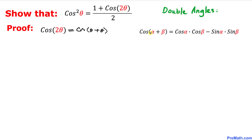Let's recall our sum of angles formula: cosine of alpha plus beta. Comparing cosine of alpha plus beta with cosine of theta plus theta, we can see that alpha is going to be theta and beta is going to be theta as well. So on the right hand side, wherever we see alpha and beta, we replace them with theta.